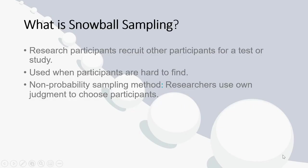This is Stephanie from StatisticsHowTo.com. Snowball sampling is where research participants recruit other people for a test or study. It's called snowball sampling because, in theory, once you have the ball rolling, it picks up more momentum along the way.